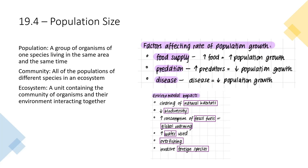Section 19.4 is population size. A population is a group of organisms of one species living in the same area at the same time. A community is all populations of different species in an ecosystem. An ecosystem is a unit containing a community of organisms and their environment, all interacting together. Factors affecting population growth include food supply — with no food, population will go extinct — more predators means lower population growth, and disease can decrease populations. Environmental impacts include clearing natural habitats, which decreases biodiversity, increased consumption of fossil fuels causing global warming, more water usage, overfishing, and invasive foreign species.